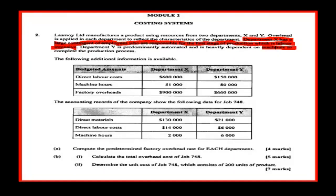The following additional information is available. We are given the direct costs — just the direct labor costs. We have three bases that we could use for our POHR. The accounting records of the company show the following data for job 748: direct materials, direct labor costs, and machine hours.